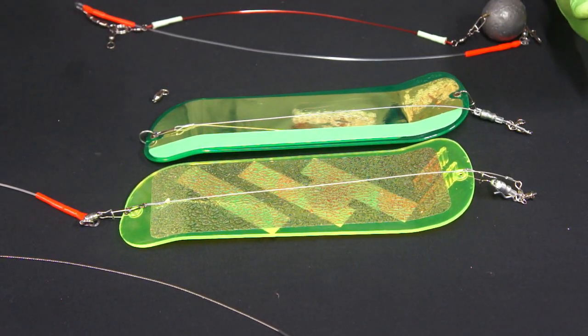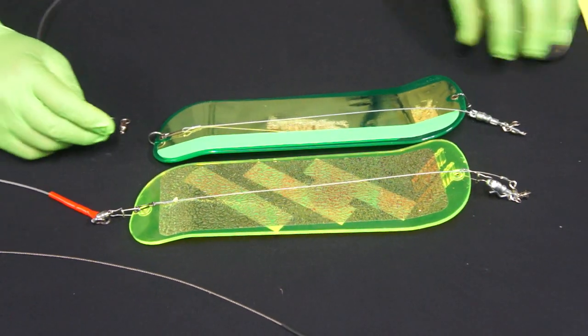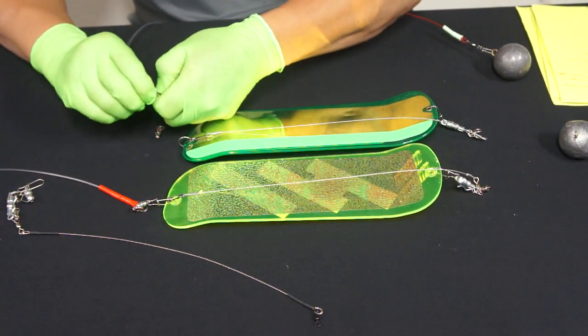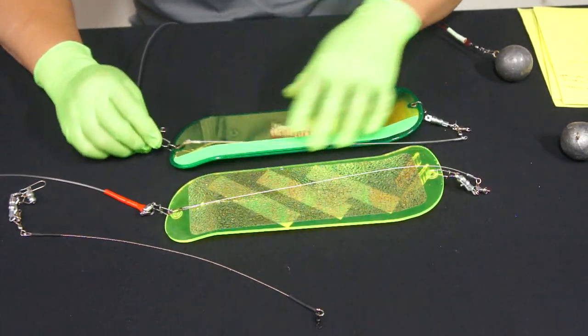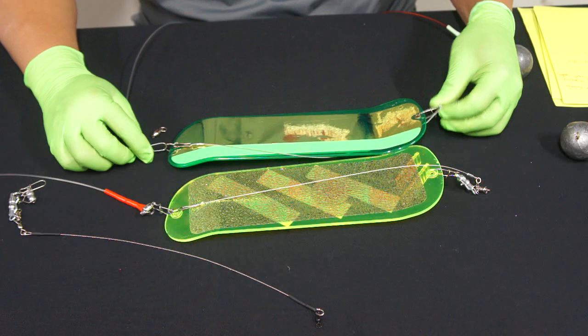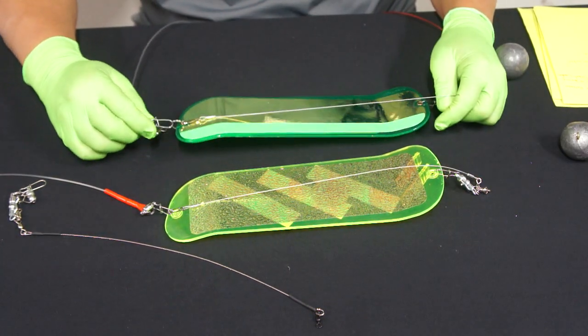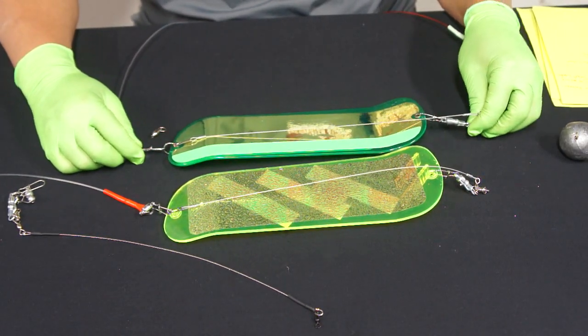it really does improve the performance of the rotation by just clipping right into that ring right there and that creates a really nice pivot point for your flasher to actually have full rotation.